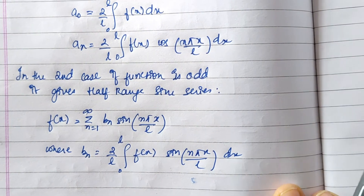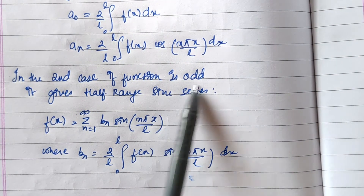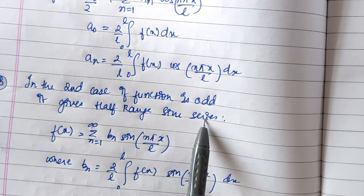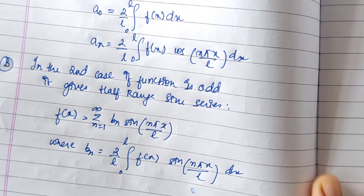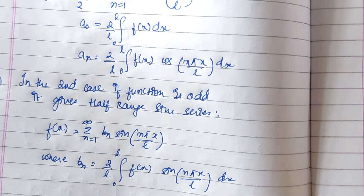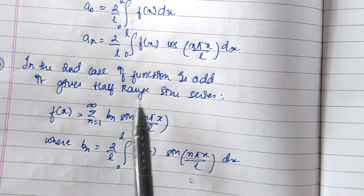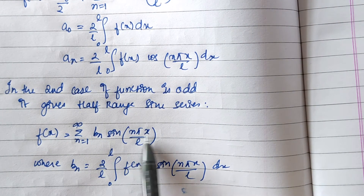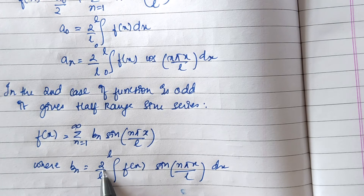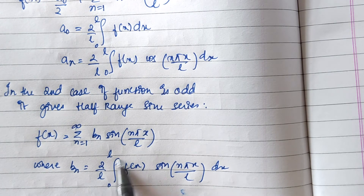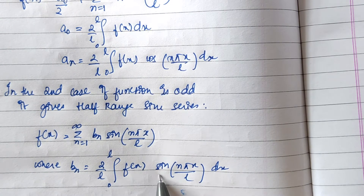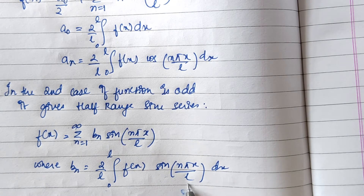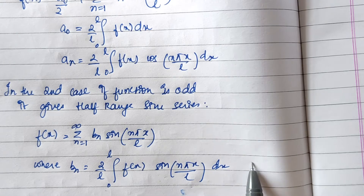In case 2, if the function is odd, it gives us the half range sine series: f(x) is equal to summation of n equals 1 to infinity of bn sin(n pi x / L), where bn is equal to 2 by L times the integral from 0 to L of f(x) sin(n pi x / L) dx.